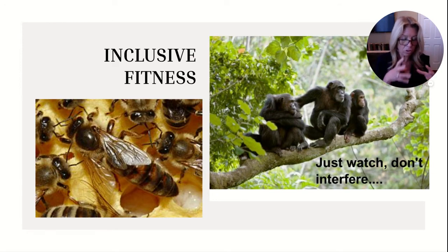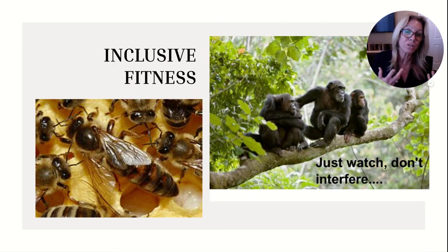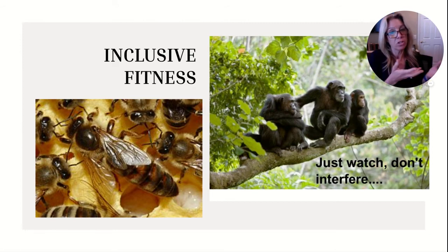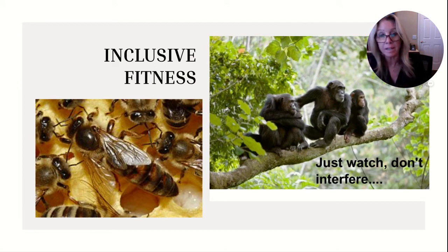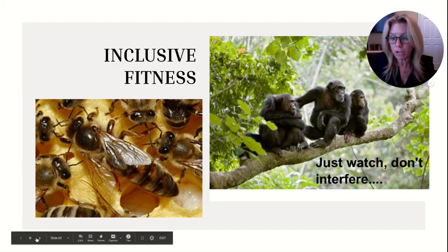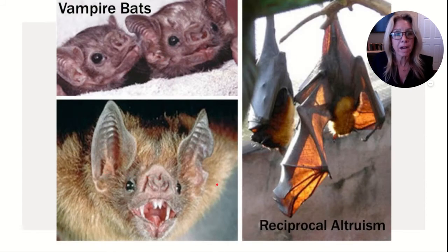Another example is chimpanzees. Females mate with several males in a close group that are probably genetically related, so what's good for one is good for all. When mating occurs, the males don't interfere — they just watch — because it's possible their own genes are being passed on. Close groups are probably genetically related.